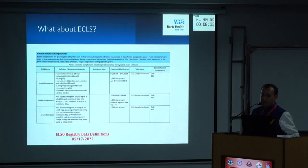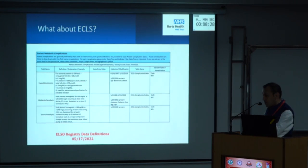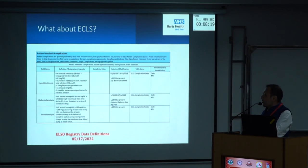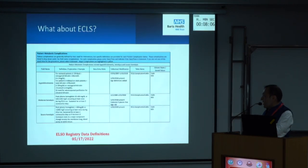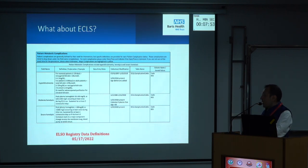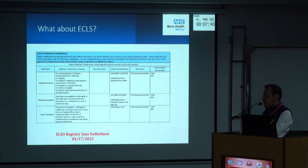What about extracorporeal life support? The ELSO registry defines hyperbilirubinemia as a total bilirubin greater than 170 micromoles per liter (greater than 10 mg/dL), moderate hemolysis as plasma-free hemoglobin of 50–100 mg/dL on two consecutive days in a single ECLS run, and severe hemolysis as greater than 100 mg/dL on two consecutive days. These are coded as metabolic complications in the ELSO registry.